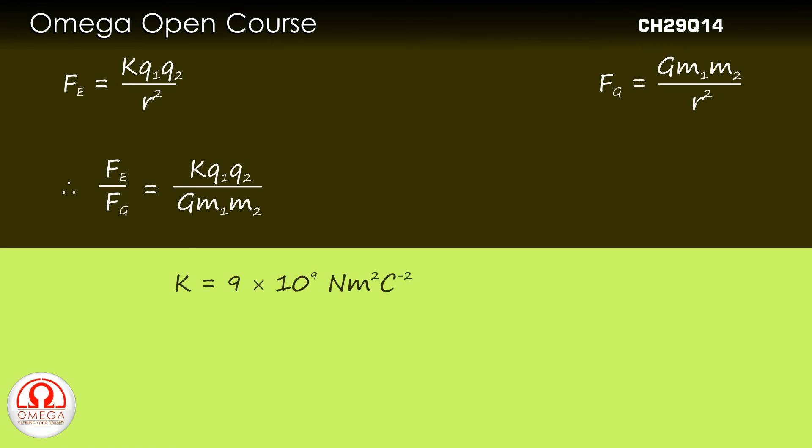The value of k is 9 into 10 to the power 9 Nm2 per coulomb square. The charge on each of the protons is 1.6 into 10 to the power minus 19 coulombs. The value of g is 6.67 into 10 to the power minus 11 Nm2 per kg square.